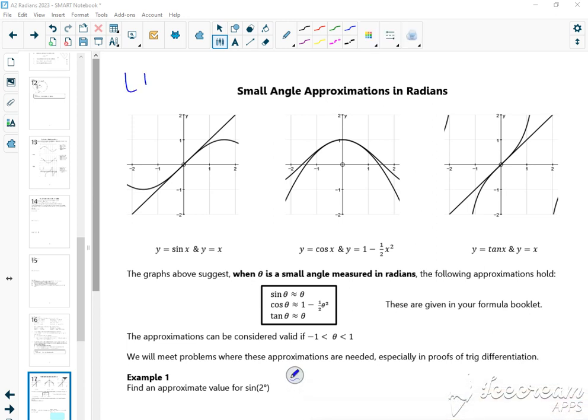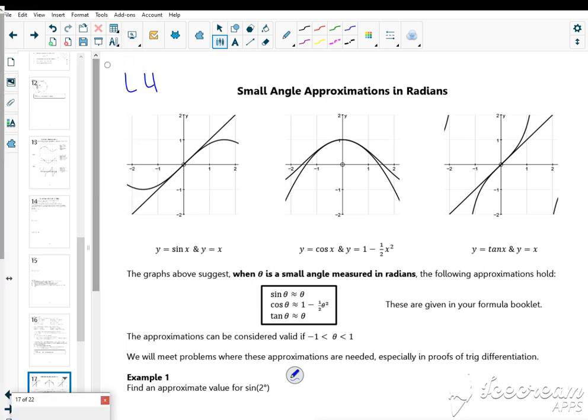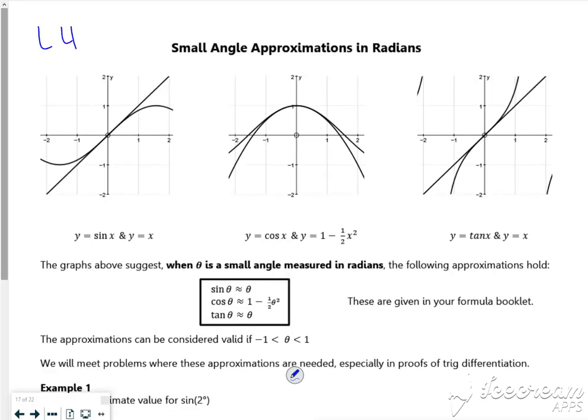Hi everyone, so this is lesson 4 in the radians pack. It's quite a nice little lesson. It's just using something called small angle approximations.